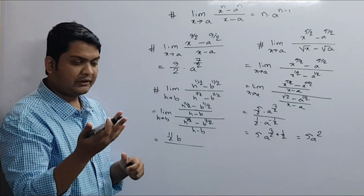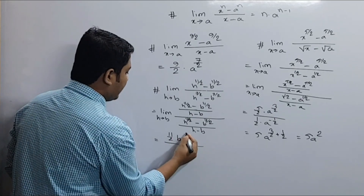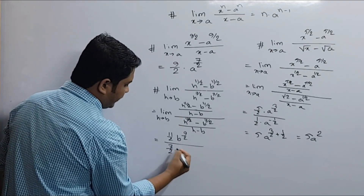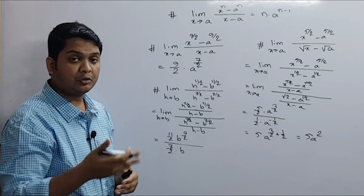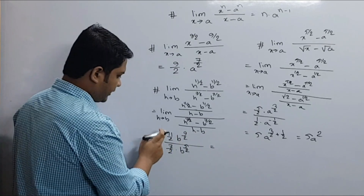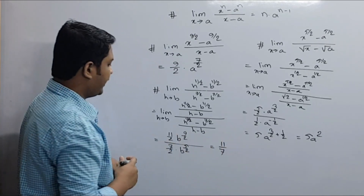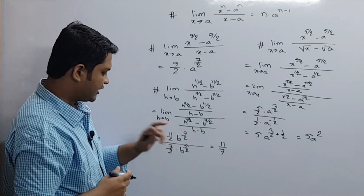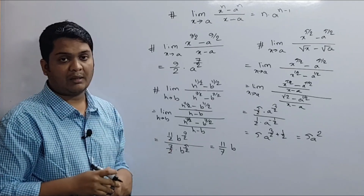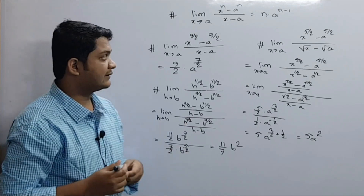So n is 11 by 2, and n minus 1 gives 9 by 2. Then 7 by 2, and b to the power 7 by 2 minus 1 gives 5 by 2. We have b to the power 9 by 2 minus b to the power 5 by 2, and 9 by 2 minus 5 by 2 equals 4 by 2, which means b squared. That is the answer.